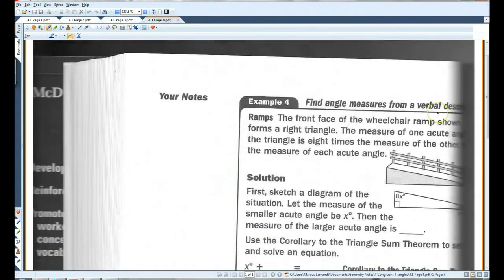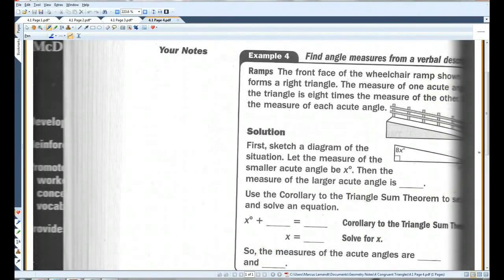All right. Last page. Example 4. I apologize once again that it got cut off, but you should be able to see it fine in your notes. The front face of the wheelchair ramp shown forms a right triangle. The measure of one acute angle in the triangle is 8 times the measure of the other. Put that over here. Find the measure of each acute angle. Okay. So, this is what we have. We have this diagram. This angle